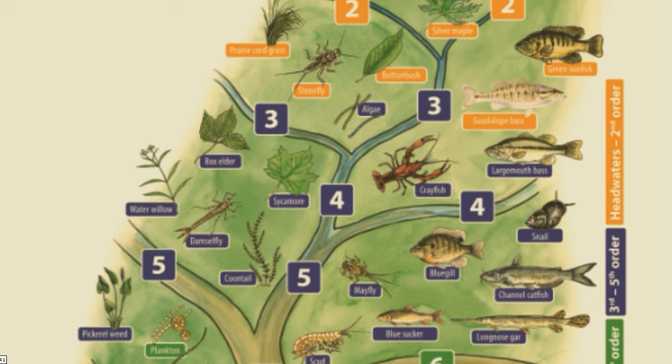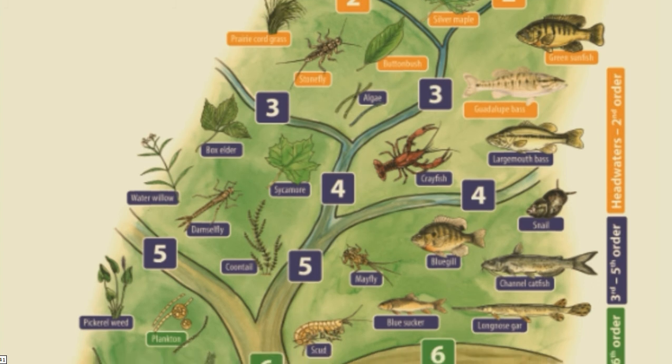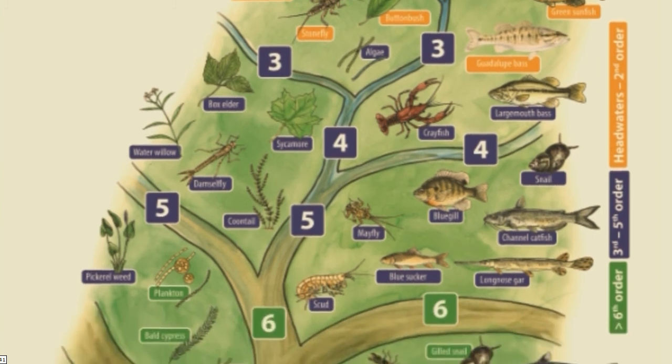When two streams come together, the waters mix and flow downstream together. The individual characteristics of the streams and the nutrients from each watershed combine and form a still larger stream.